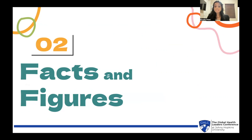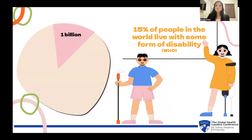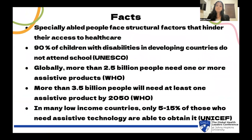So now that we've understood what it is, let's look at why assistive technology is important on a global scale. Around 15% of people in the world live with some form of disability — that's almost 1 billion people globally. Specially abled people face structural factors that hinder their access to healthcare. There's a lack of easily accessible resources and infrastructure, and they may face poverty because they are less likely to be employed due to discrimination, which forces them into a lower socioeconomic standing, impacting their quality of healthcare.